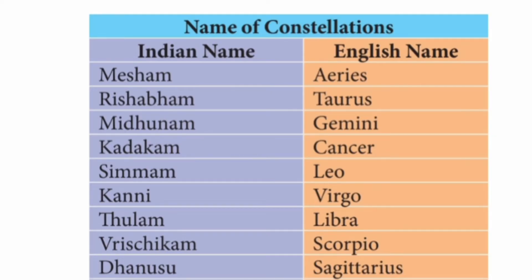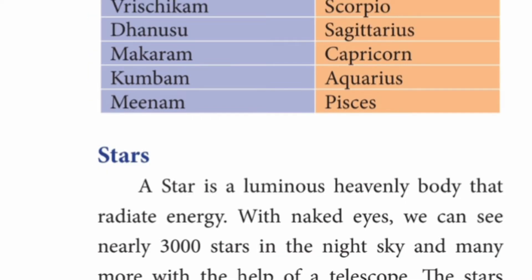The names of the constellations in Indian and English: Mesham – Aries, Rishabam – Taurus, Midunam – Gemini, Kadaham – Cancer, Simmam – Leo, Kanni – Virgo, Tulam – Libra, Vrishagam – Scorpio, Danush – Sagittarius, Maharam – Capricorn, Kumbam – Aquarius, Meenam – Pisces.